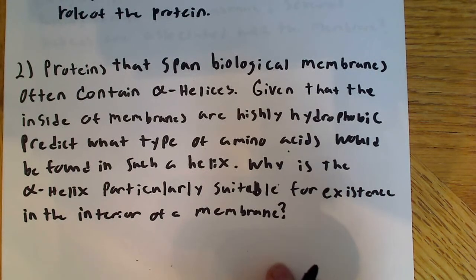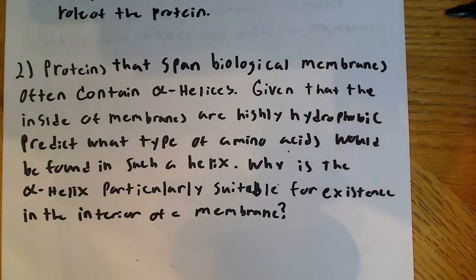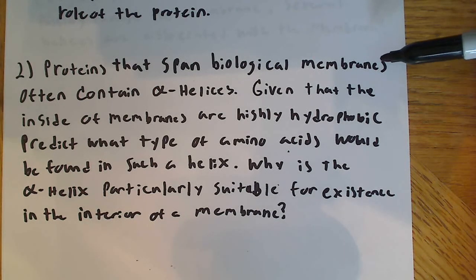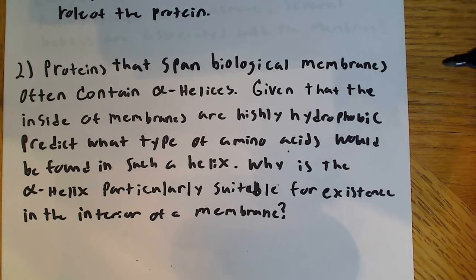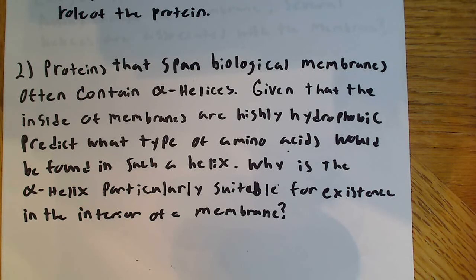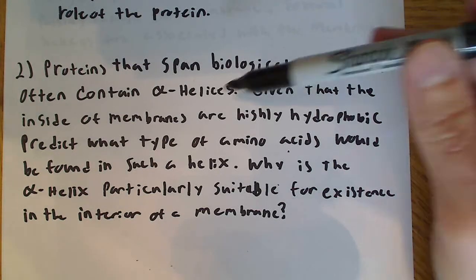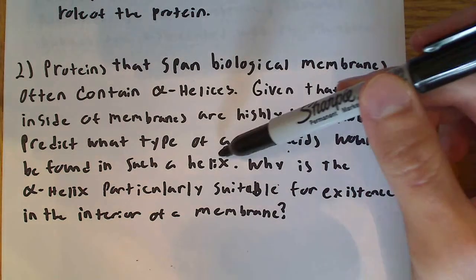Moving on to the second question. This one is a bit strange and actually tripped me up along the way. It says: proteins that span biological membranes often contain alpha helices. Given that the inside of membranes are highly hydrophobic, predict what type of amino acids would be found in such a helix.